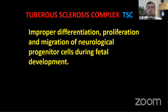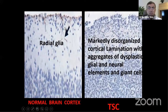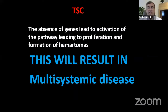There is improper differentiation, proliferation, and migration of neurological cells during fetal development in the CNS. Normal organized brain cortex contrasts with the totally disorganized, dysmorphic cortex seen in tuberous sclerosis complex, showing markedly disorganized lamination with abnormal neural and glial elements. Histology reveals dysmorphic neurons and balloon cells, which are characteristic of tuberous sclerosis.